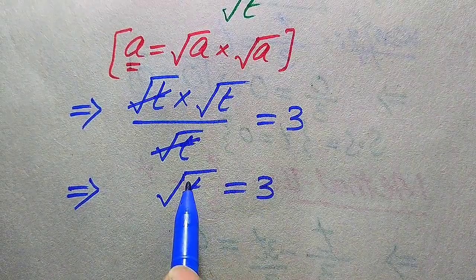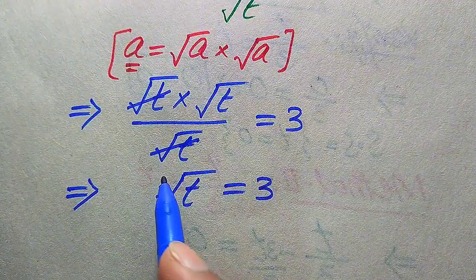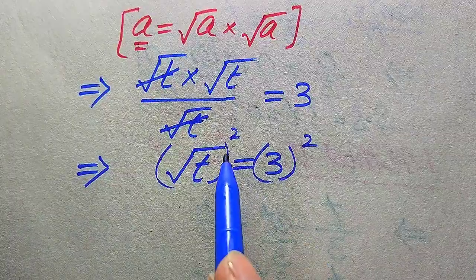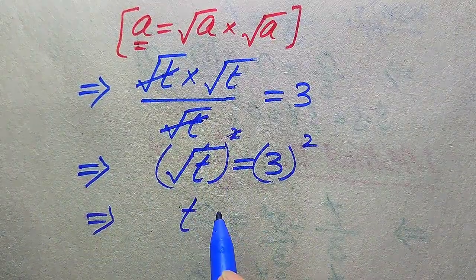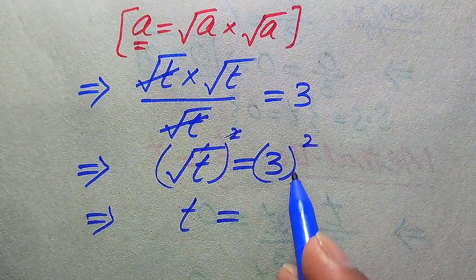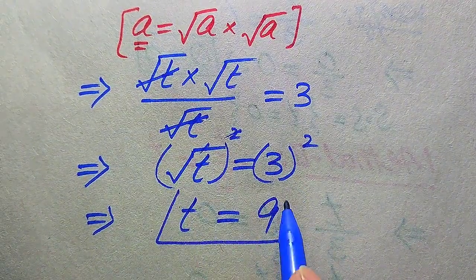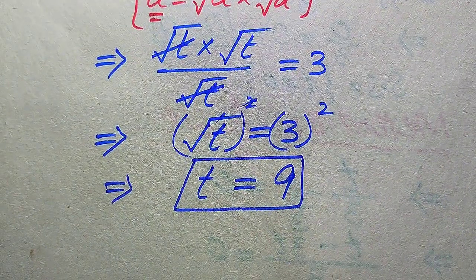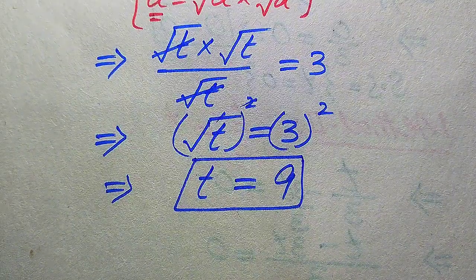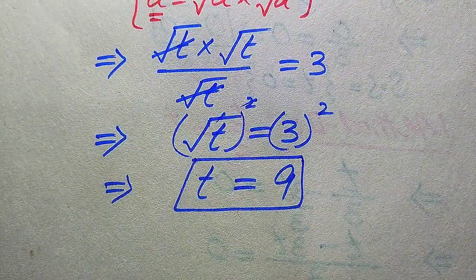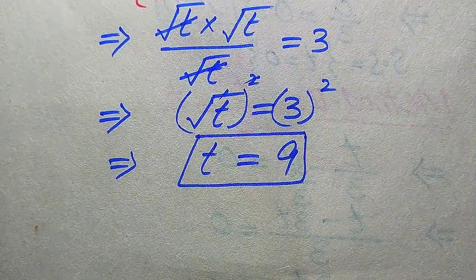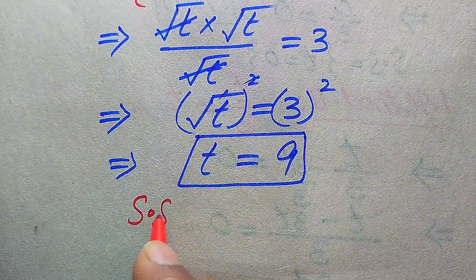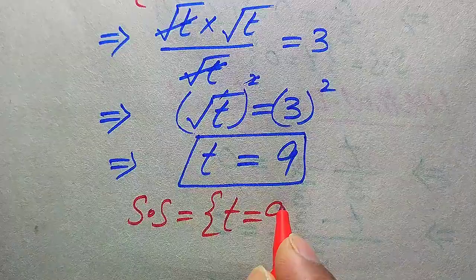After cancellation we obtain square root of t equals 3. To remove the square root, we square both sides, giving t equals 9. This is the only root obtained in Method 2, which also satisfies the original equation. Therefore, the solution set of this problem is t equals 9.